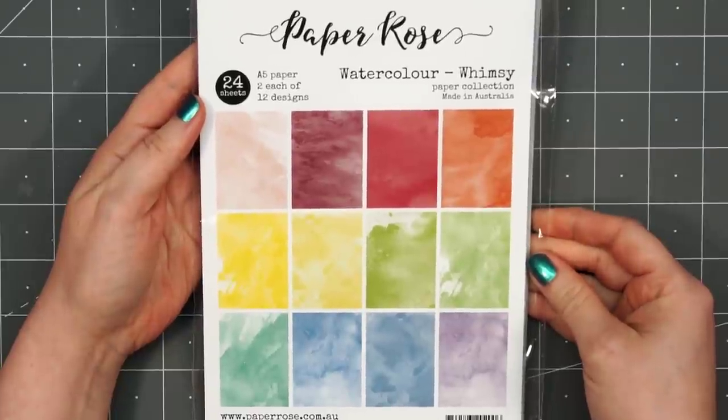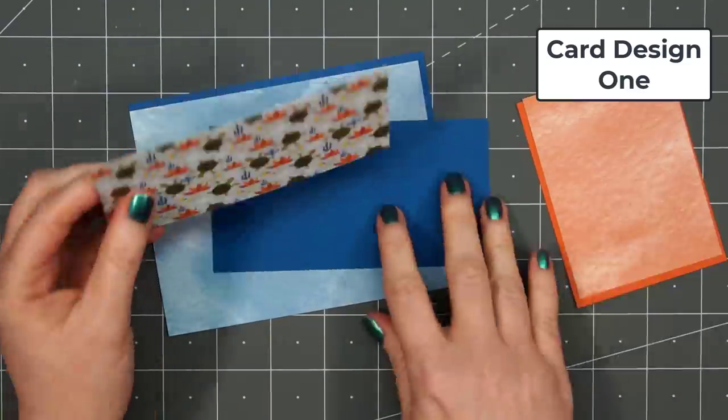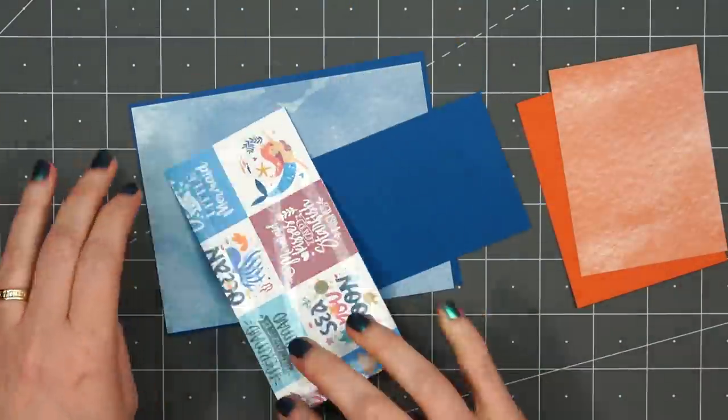I'll also be using their Watercolor Whimsy Collection. This is an A5 size paper collection. Since the patterns in the 6x6 collection are fairly busy, I wanted to bring in some muted patterns to tone down that busyness.